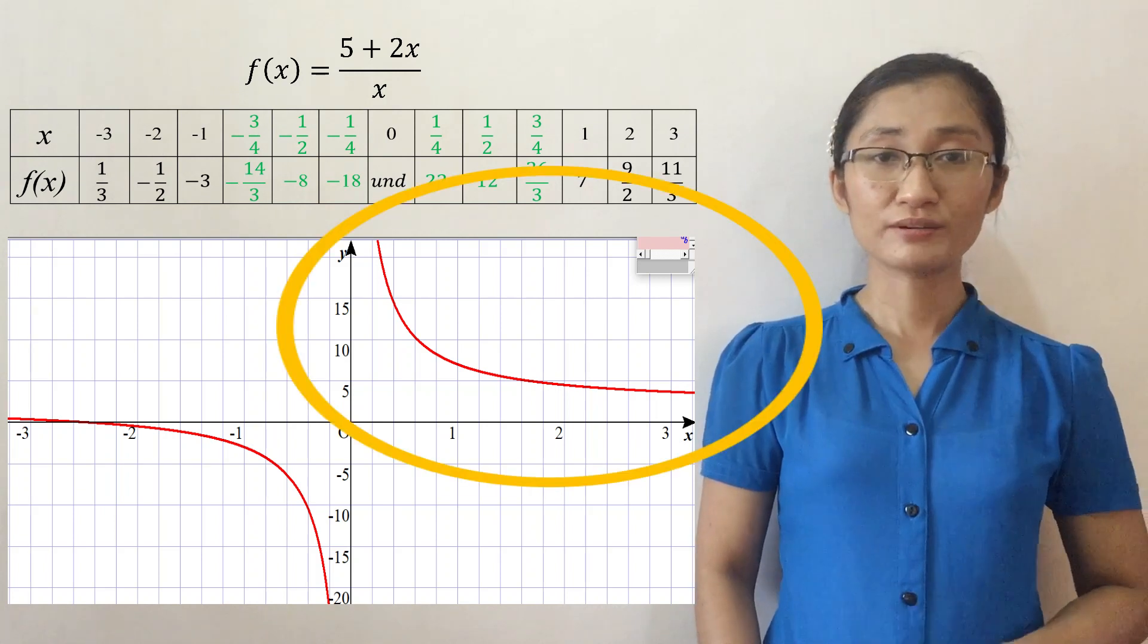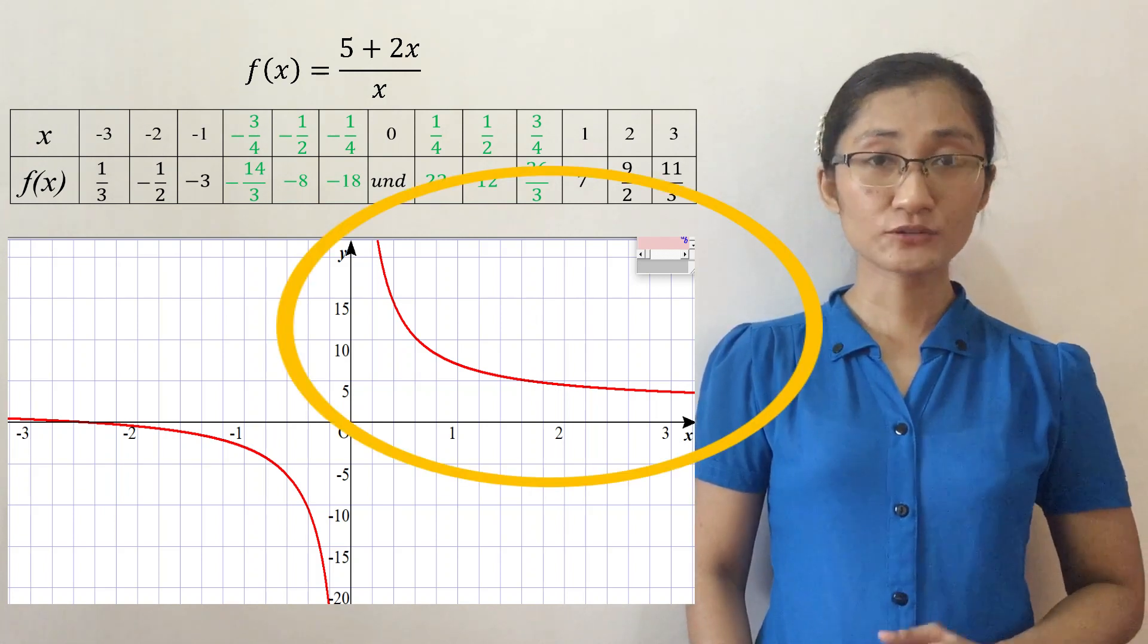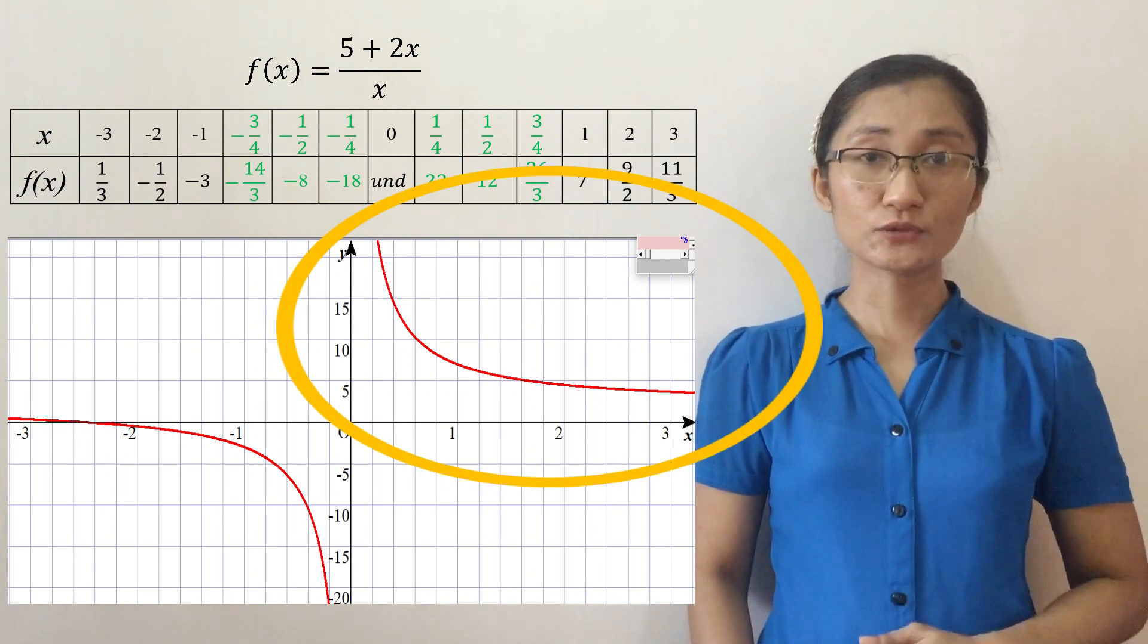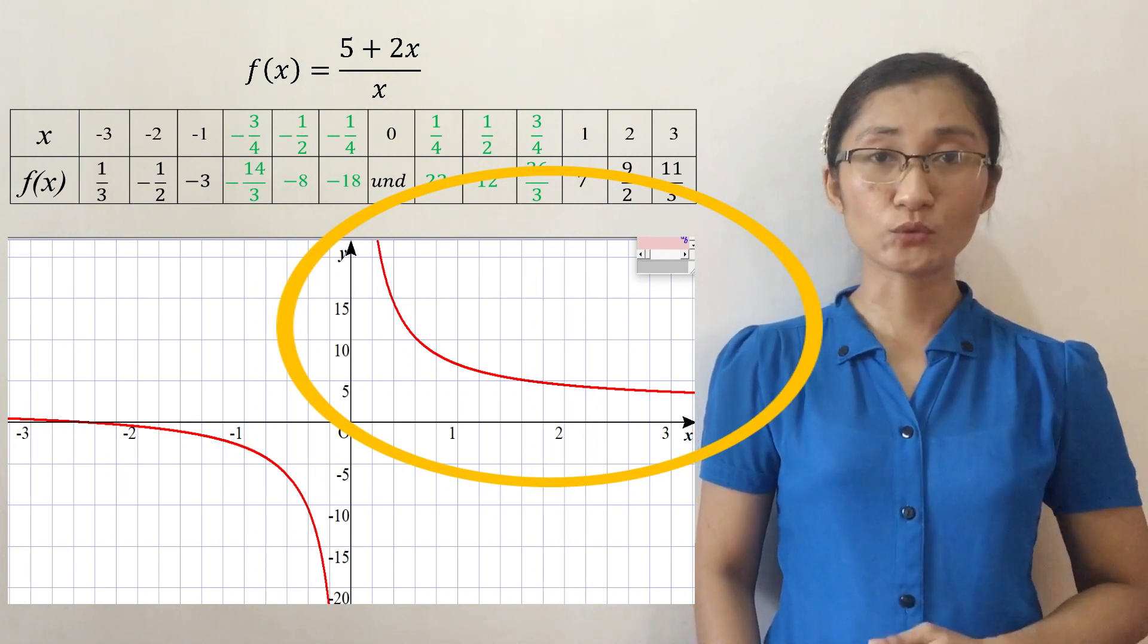Look at the graph above. While y cannot be 0, y gets closer and closer or it approaches and approaches positive infinity as x approaches 0 from the right.